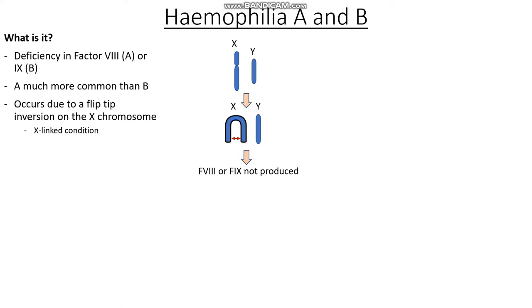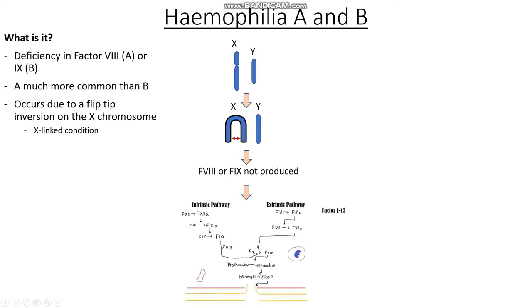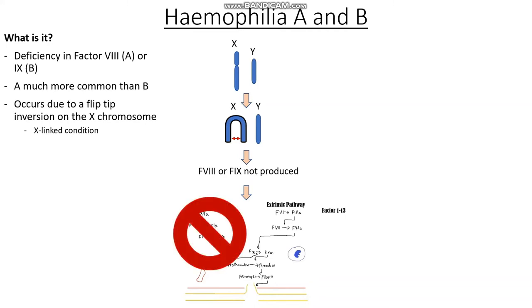What is the consequence of not having enough Factor 8 and Factor 9? We know that Factor 8 and Factor 9 take part in the clotting cascade to help stabilize our platelet plug and help form fibrin. They take part specifically in the intrinsic pathway, where in the very last step, Factor 8 and Factor 9 together help to activate Factor 10 into Factor 10a. If we have a deficiency of either Factor 8 or Factor 9, we are halting the intrinsic pathway and therefore cannot produce fibrin or stabilize our clot.